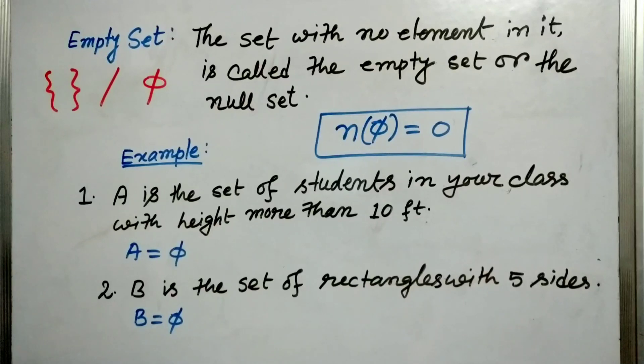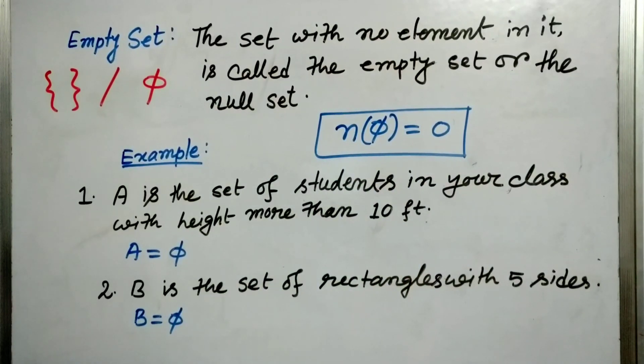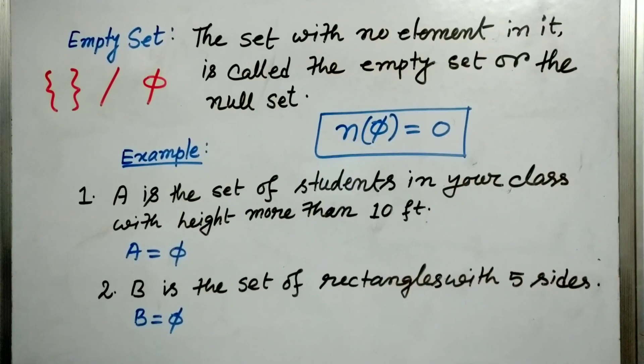So students I want to mention one thing here that the cardinal number of an empty set is zero because there is no element. So the total number of elements is zero. So the cardinality of the empty set is zero.